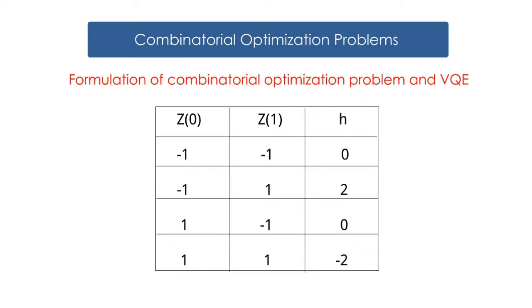Here we just check the whole answer in the table. The Hamiltonian takes the minimum value of negative 2, when Z at zeroth is 1 and Z at first is 1. Then, VQE will solve this automatically. This time as an ansets, we used 4 parameters of a, b, c, d, where a and b for the zeroth qubit, and c and d for the first qubit.